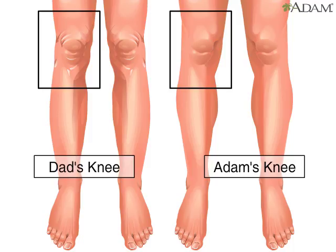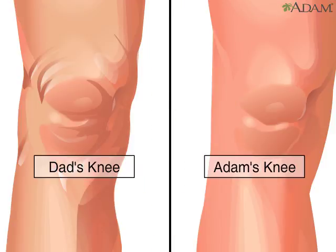Osteoarthritis is the most common form of arthritis and is associated with the aging process. The image shows two pairs of legs from above the knee down. Even from the outside, you can see that the knee of an older person looks considerably different than that of a younger person.